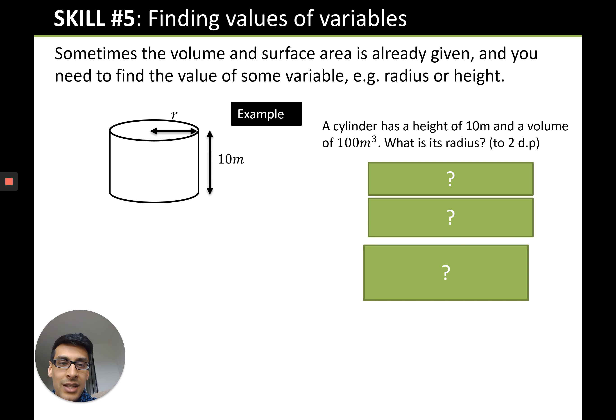In this case we'd be given a cylinder height 10, the volume is 100, what's the radius? You know that the volume of a cylinder is pi r squared times height. Now you know the height is 10, the radius we don't know, pi is just a number, and we know that this equals 100.